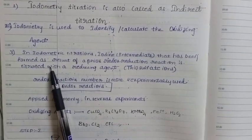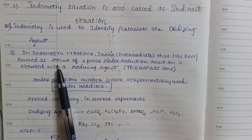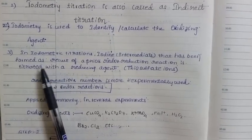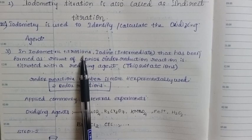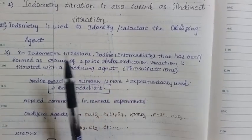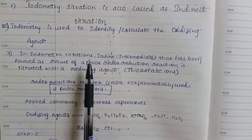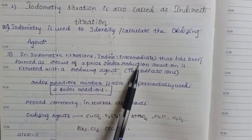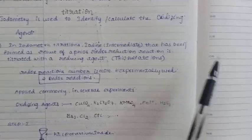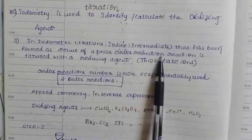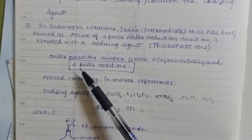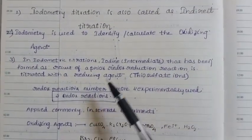In iodometry, generally an iodine solution is involved. Iodine acts as an intermediate that has been formed as a result of a prior redox reaction, and is then titrated with a reducing agent — thiosulfate ions.